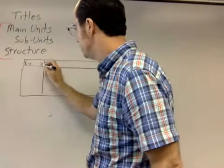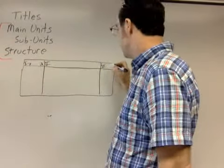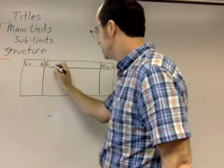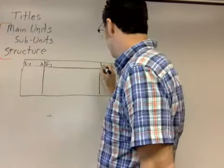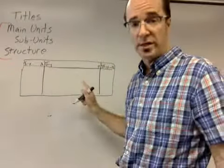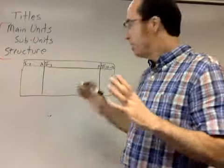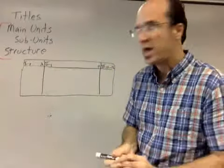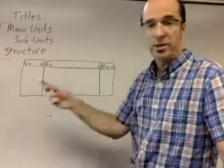The first and the last main units are relatively short, and the second main unit is the bulk of the text. So let's say that we have 12 verses. First unit is verses 1 to 2. The third unit is verses 10 to 12. I'm just making these up, and I don't have any particular text in mind. Then the middle section is verses 3 to 9.